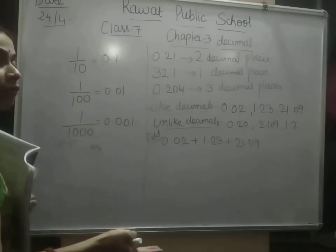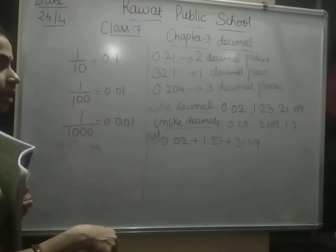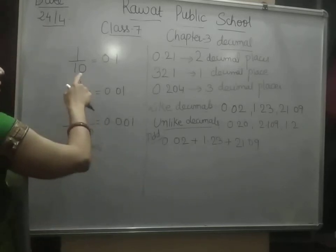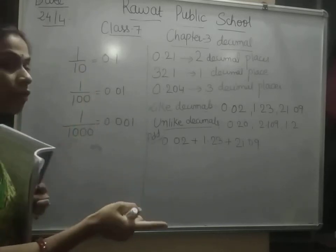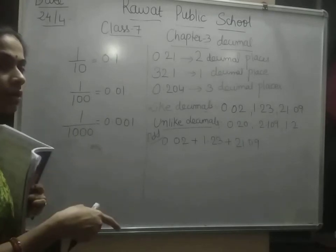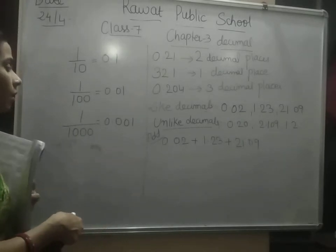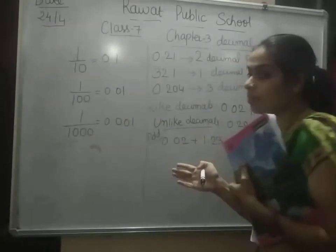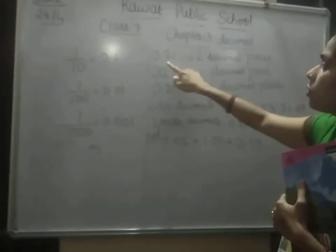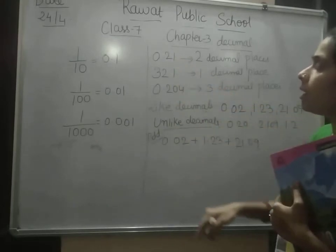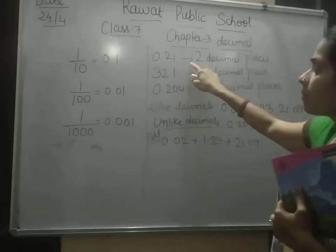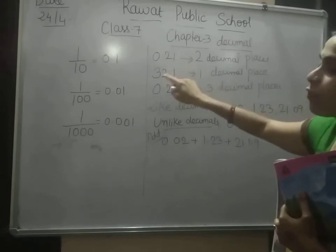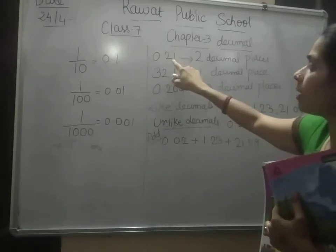So before 2 numbers we have to put the decimal. And here with 10, that is 1 and 0, so before 1 number we have to put the decimal. Hope you have understood this. Now here I have taken one example: 0.21. Here the decimal places are 2 because the decimal is before 2 numbers — 1 and 2.